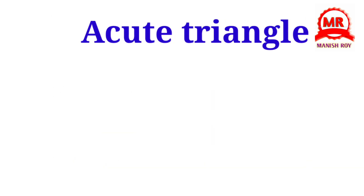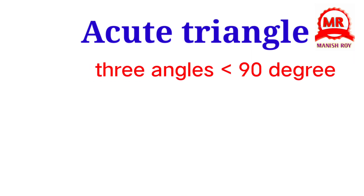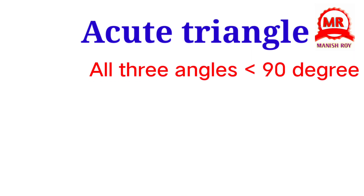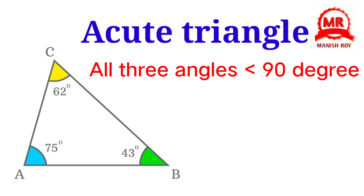Acute triangle. In an acute triangle, all three angles are less than 90 degrees. In this figure, all the angles are less than 90 degrees, so it is called an acute triangle.